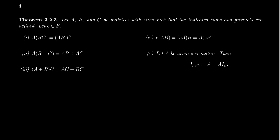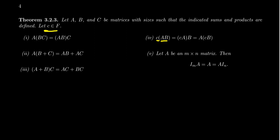Matrix multiplication is also distributive. You get the left distributive law: A times (B + C) equals AB plus AC. You also get the right distributive law: (A + B) times C equals AC plus BC. It's important to mention both laws since matrix multiplication is non-commutative — distributing on the left does not automatically mean it distributes on the right. Regarding scalar multiplication: C times (AB) equals (CA)B equals A(CB), so you can scale either factor.